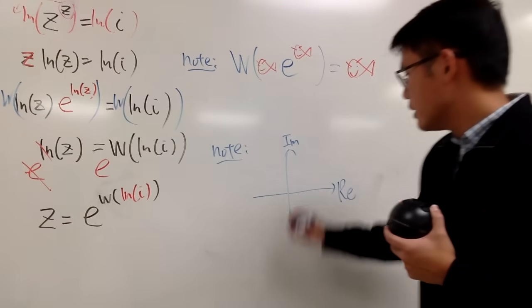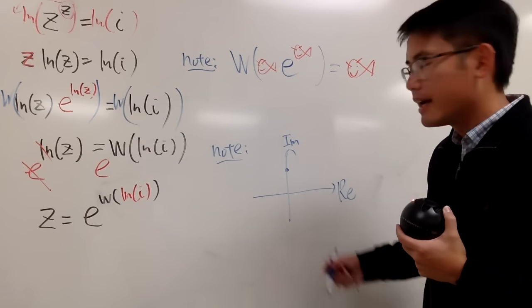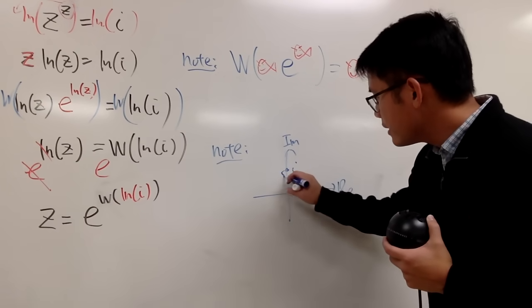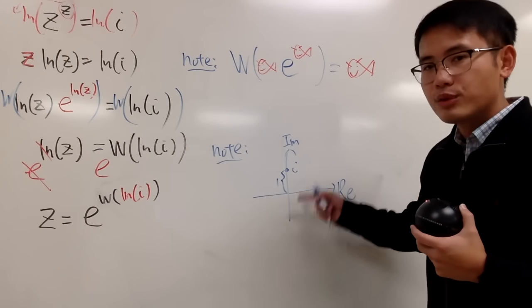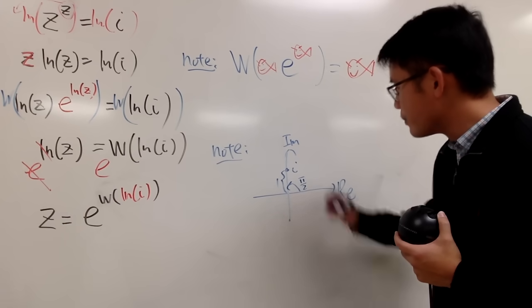And for i, is this point right here. This is like 0 plus 1i. And you need to know two things. Here is i, and the distance from 0 to i is 1. And the other thing you have to know is the angle from here to here, which is π over 2.